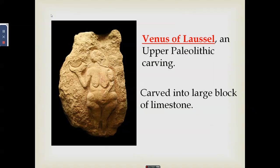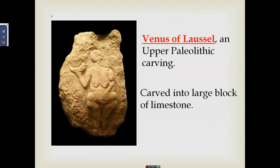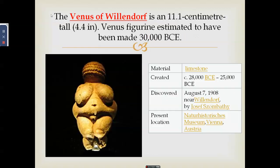Another example is the Venus of Laussel, carved on a large block of limestone — compared to the ivory of Hohle Fels. The most famous is the Venus of Willendorf, also small at only 4.4 inches, slightly bigger than the Hohle Fels figure, and also made of limestone.